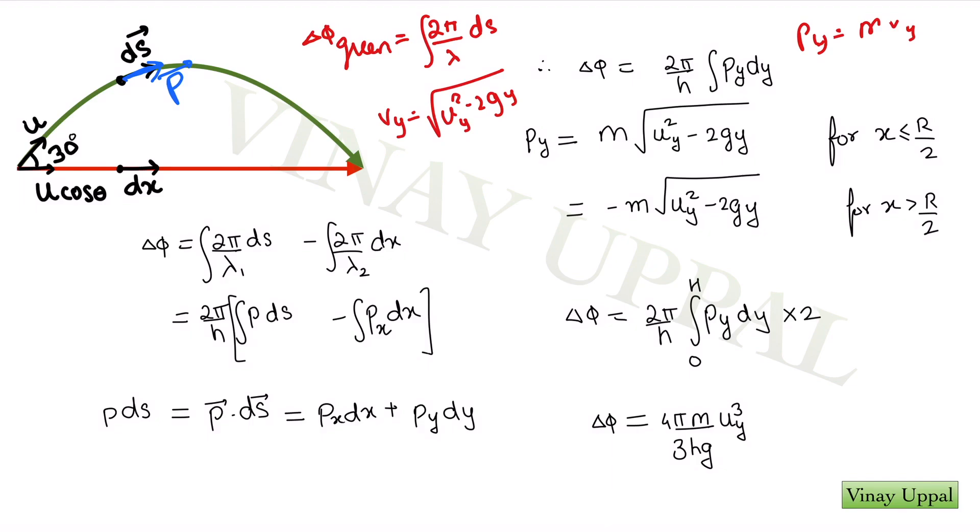Here, just one point where you should be careful is when you are writing vy as a square root, the square root is a positive quantity. For x less than or equal to R/2 where R is the range of the projectile, basically during the ascent, I will use a positive value, positive root for py and during the descent, I need to use the negative root.